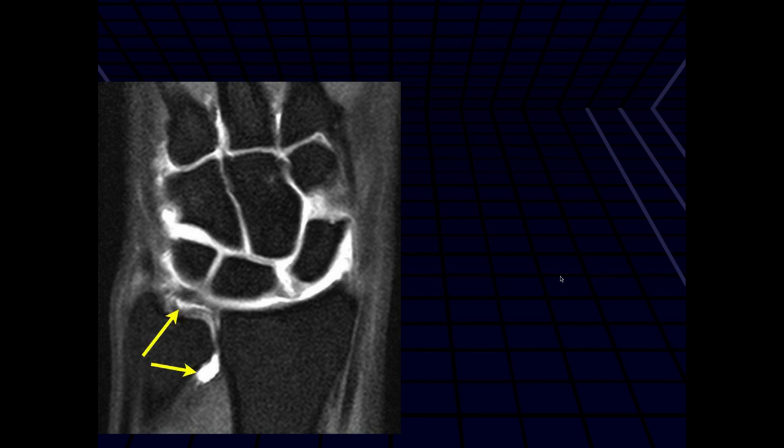We do see fluid right there within the distal radial ulnar joint and we see signal — kind of horizontal signal going through the radial aspect of the TFCC. So it's kind of a weird configuration, like a transverse tear of the radial aspect. And there might also be a tear of the membranous portion of the scapholunate ligament.